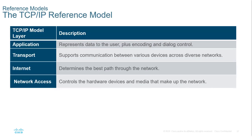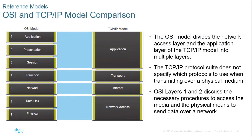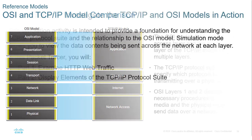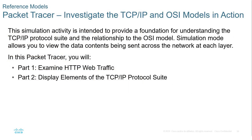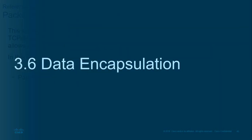The TCP/IP reference model and how it correlates to OSI: OSI layers 7, 6, and 5 correlate to the TCP application layer. OSI layer 4 correlates to TCP's transport layer. OSI layer 3 correlates to the internet layer. OSI layers 2 and 1 correlate to the network access layer. We have a Packet Tracer lab to help explore this type of traffic.